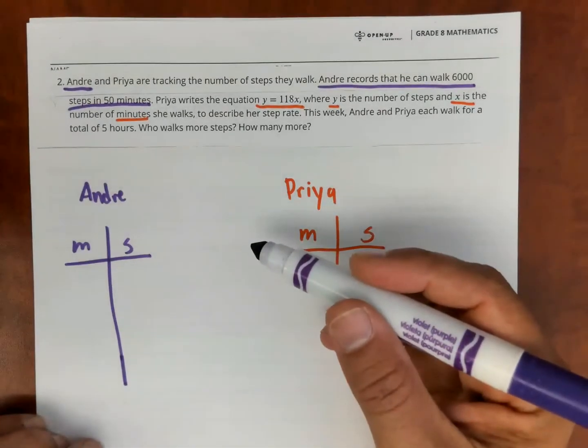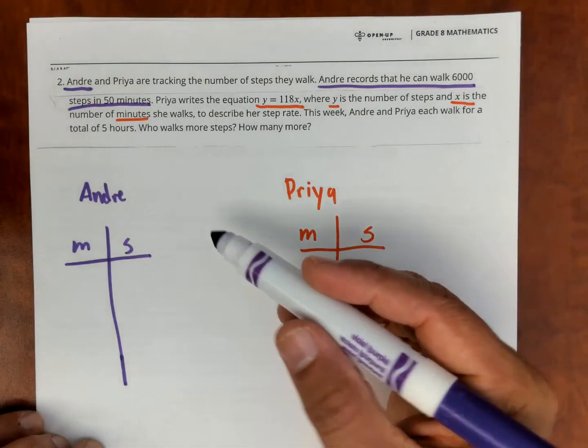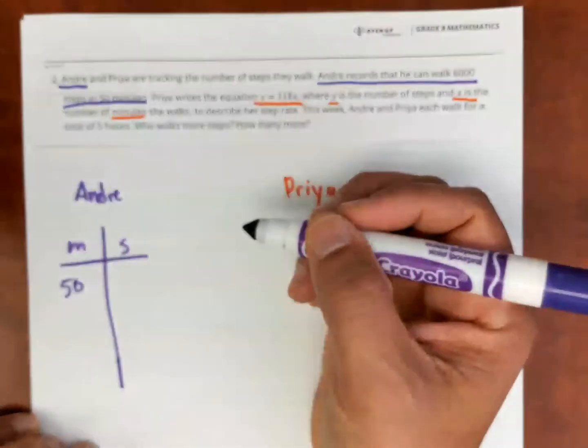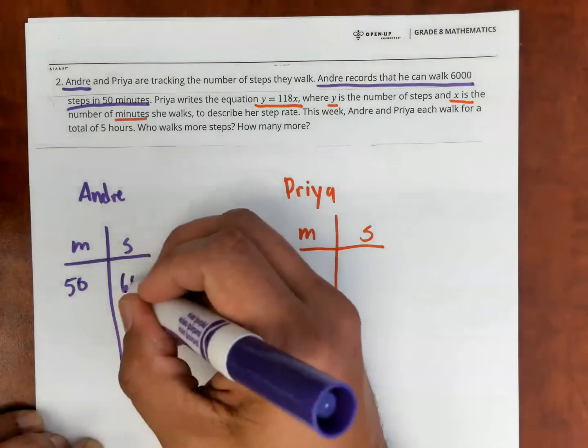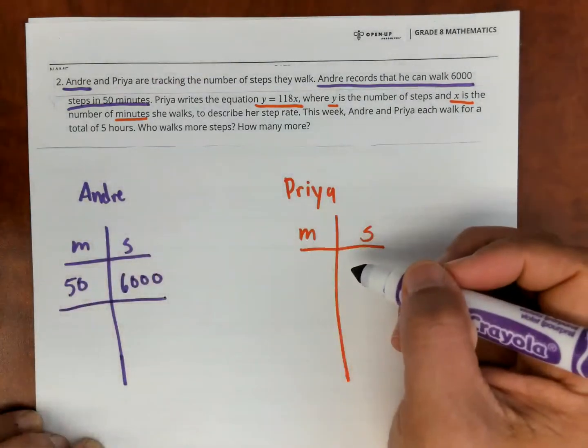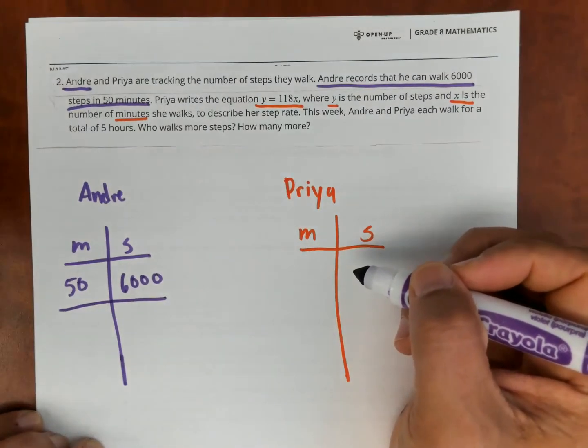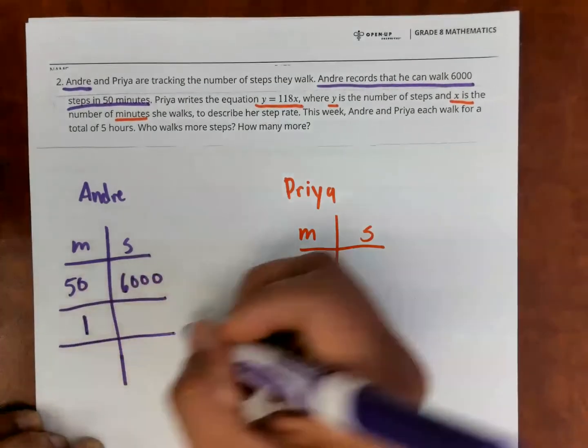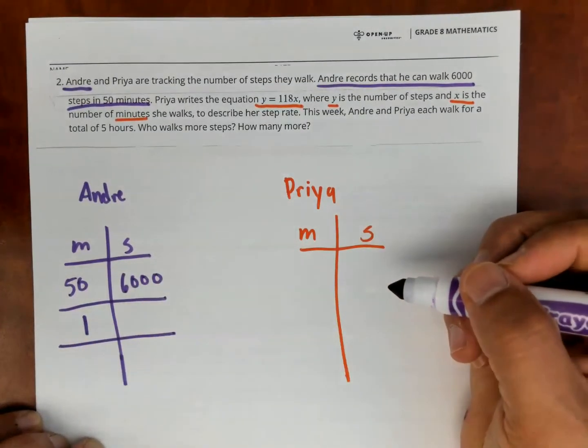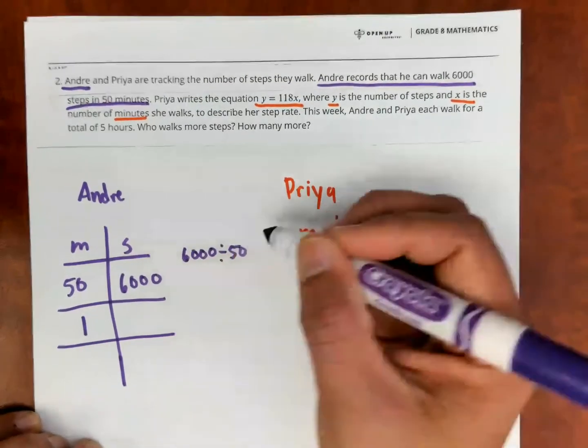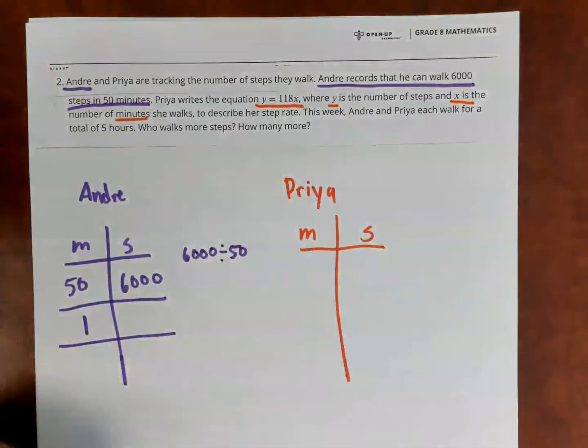So I'm going to start with Andre's here on the left. Remember, M is minutes. So I know for 50 minutes, Andre walks 6,000 steps. So then if I can double, keep doubling, halving. So what I'm going to do is I want to find out what it is for one minute. So what I'm going to do is 6,000 divided by 50, that's going to tell me how many steps Andre takes in one minute.